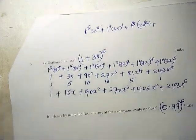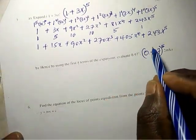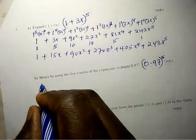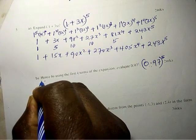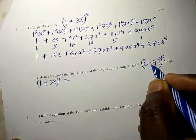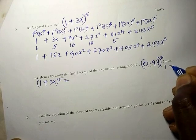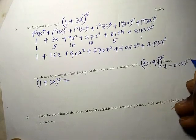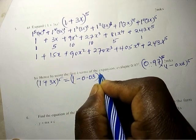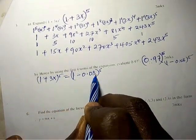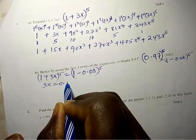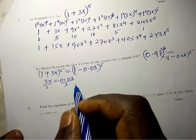So first, how can we write this number in the form of this? This number is actually 0.97. We can write this as (1 - 0.03)^5. So we compare: 1 equals 1, and 3x equals 0.03, meaning x = 0.01.